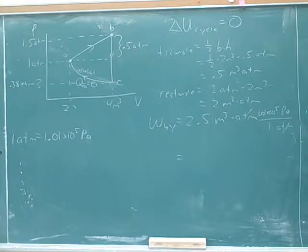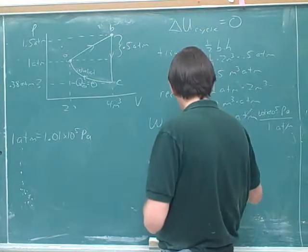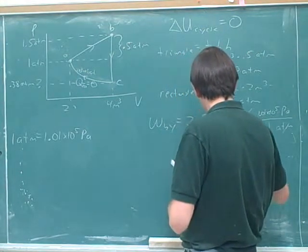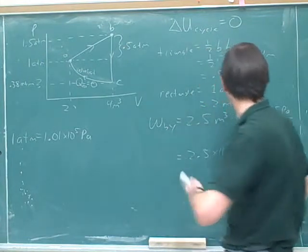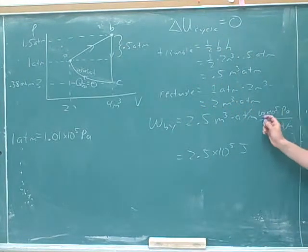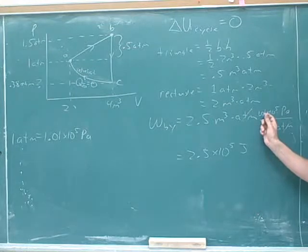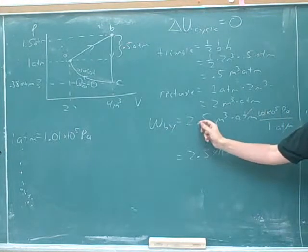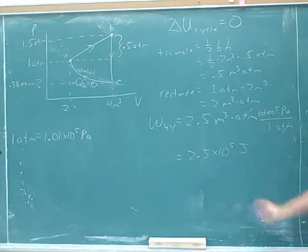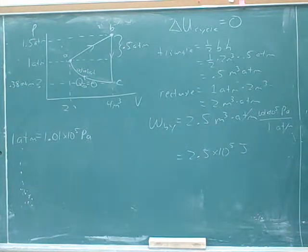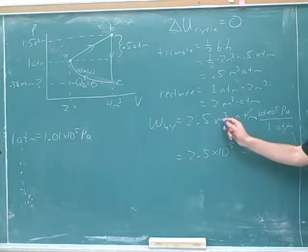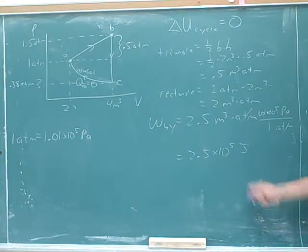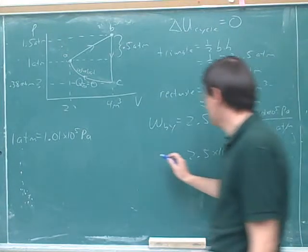So I think it would be 2.5 times 10 to the fifth Joules. Right. We actually can kind of do that without the calculator. 1.01 is basically just 1. We can just ignore that. We're really just putting in another factor of 10 to the fifth. So we went from 2.5 to 2.5 times 10 to the fifth. And now we can assume that it's going to come out in Joules. We can assume that cubic meters times Pascals is Joules because those are all standard units. So now this would be in Joules.